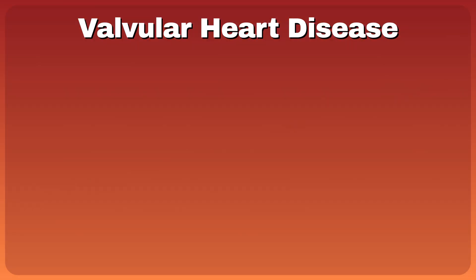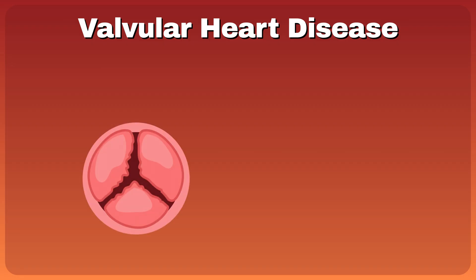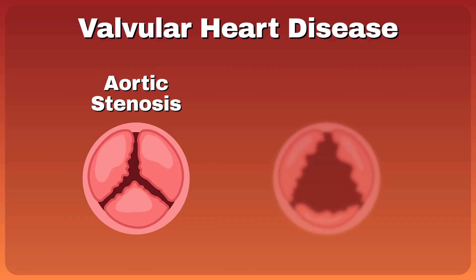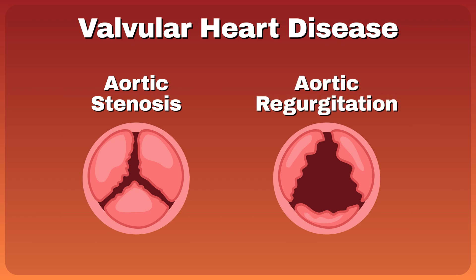When the aortic valve is not open or closed properly, that is when bad things start to happen. When the valve becomes stenotic, it cannot open properly — a diseased state known as aortic stenosis. The opposite problem, when the valve does not close completely causing blood to leak backwards, is known as aortic regurgitation.